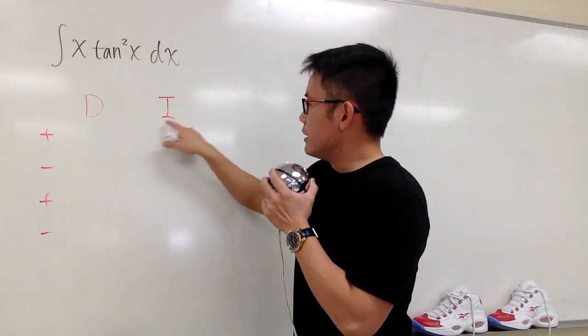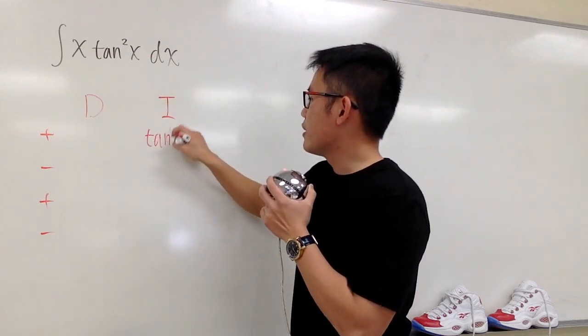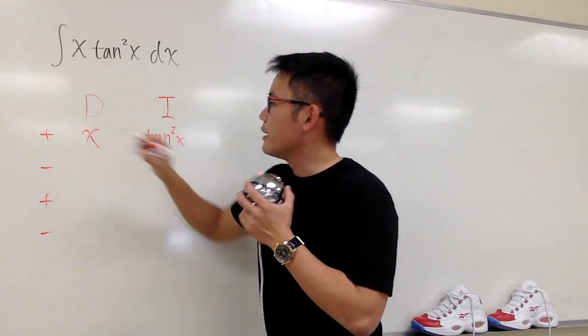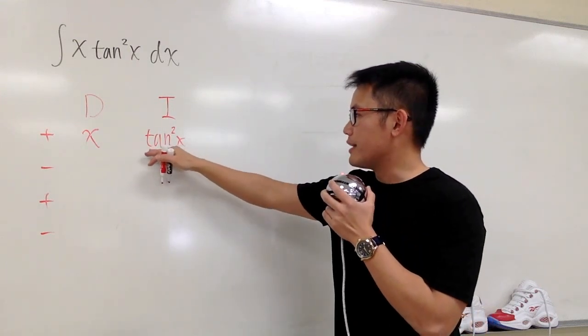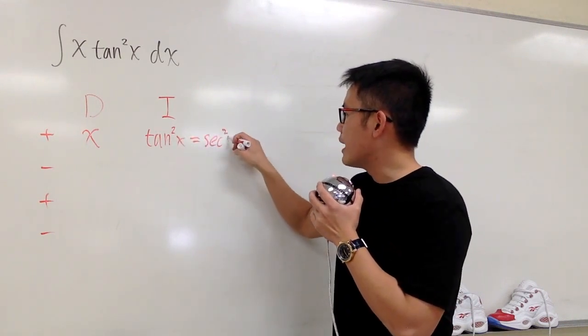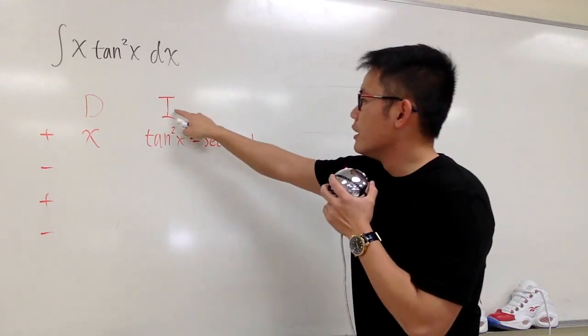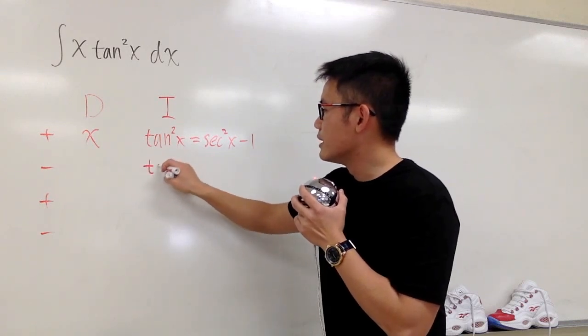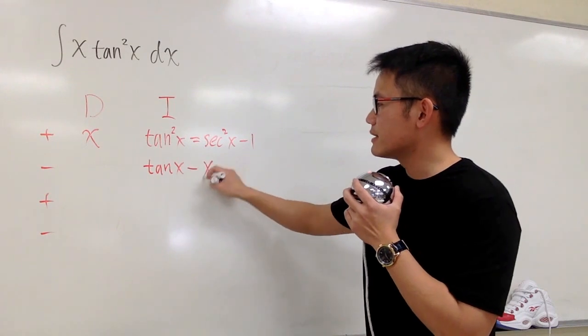I'm going to integrate the tangent squared x. Let me put that down right here. This is doable. In the meantime, I will choose x to be differentiated. If you have seen my other video, to integrate tangent squared x, the way to do it is I will have to look at this as secant squared x minus 1. And this is actually much easier, right? Because we know the integral of secant squared x is just tangent x, and then the integral of minus 1 is just minus x.